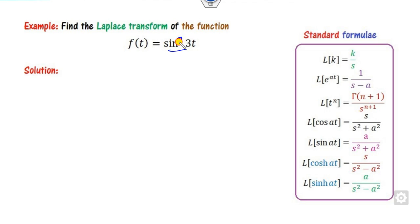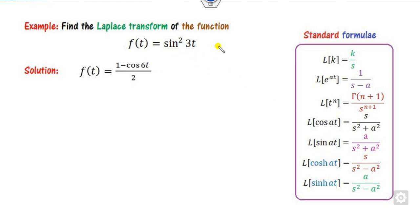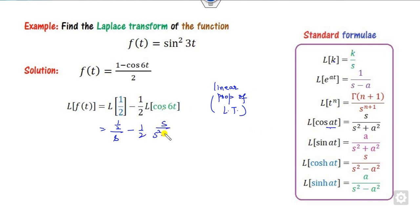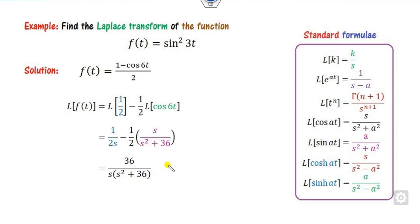For sin²(t), it does not directly match the standard sine formula. There are two methods: you can integrate directly using by parts, but that takes a long time. The best way is to represent it using the trigonometric identity cos(2a) = 1 − 2sin²(a), so sin²(t) = (1 − cos(2t))/2. Then take the Laplace transformation on both sides using the linear property. The Laplace of the constant 1/2 is 1/(2s), and the Laplace of cos(2t) is s/(s²+4). You can then simplify to get the required answer.